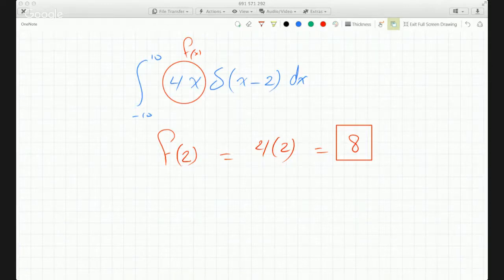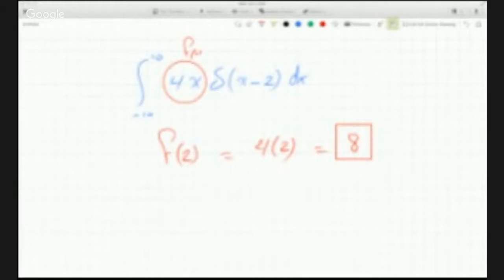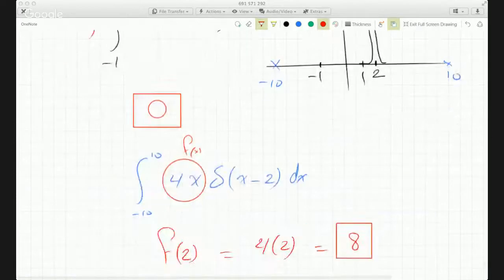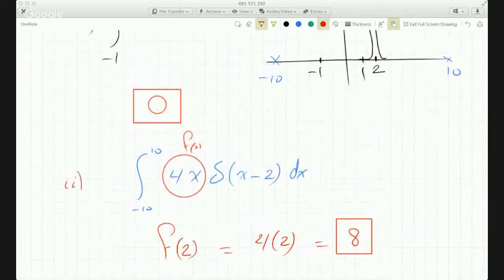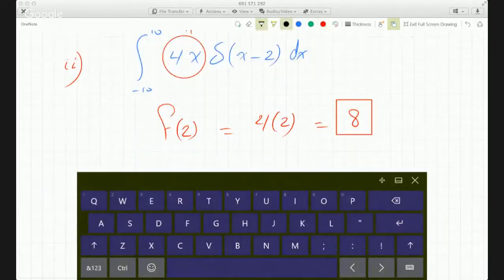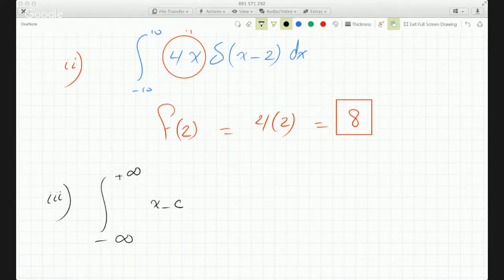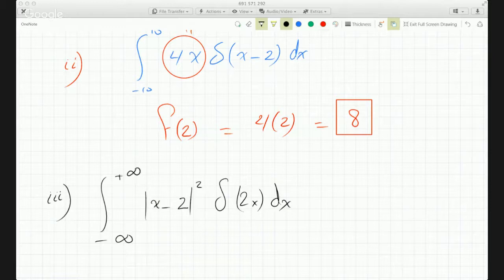Questions so far on those two that we did? So this was number one and this was number two. On the third one, it says the integral from minus infinity to plus infinity of |x - 2|² Dirac delta function of 2x dx.